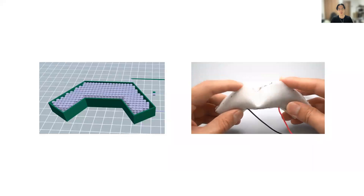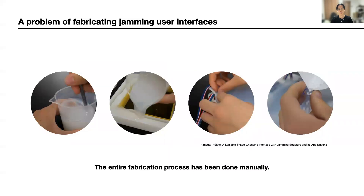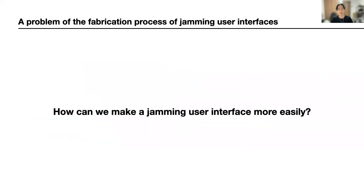The background of this study will be explained first. When I looked at the existing production process of jamming user interfaces, I noticed that the entire process was done manually and looked complicated. I wondered if I could make it a little easier, and I decided to research the automatic production of jamming user interfaces using a multi-material 3D printer, because this printer can print the model with two different materials that could be used for the membrane and beads of the jamming user interface.